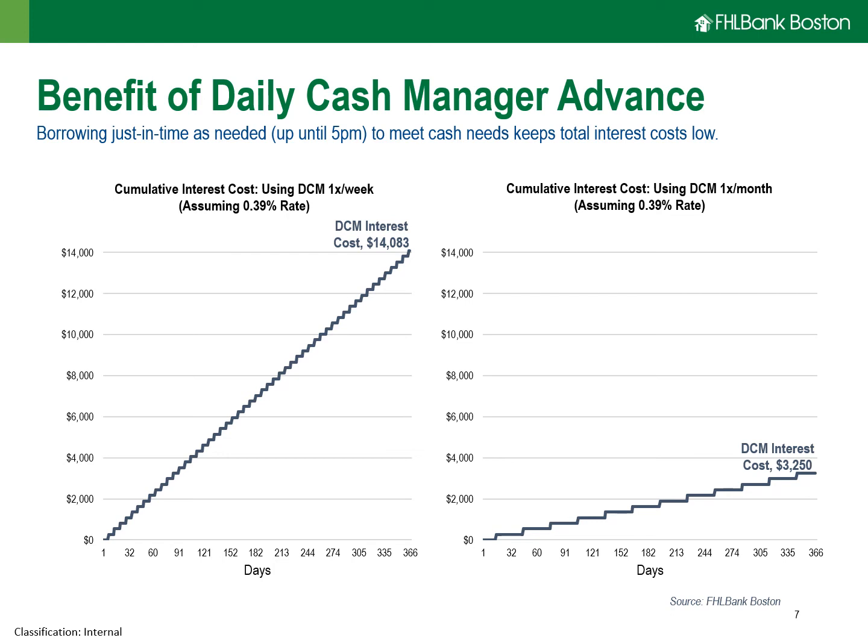The chart on the left-hand side shows an example where the member would borrow $25 million of overnight money using the DCM product once a week, assuming the most recent 39 basis point rate. Over the course of one entire year, the cost for those intermittent DCM borrowings is just a little more than $14,000 — and remember, the investment income we were earning on the principal was $500,000. On the right-hand side, if the liquidity needs were less frequent — just one time a month — the cost over one year would be significantly less, just a little more than $3,000.